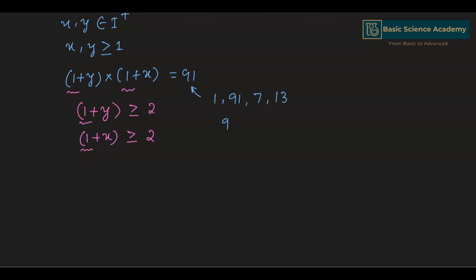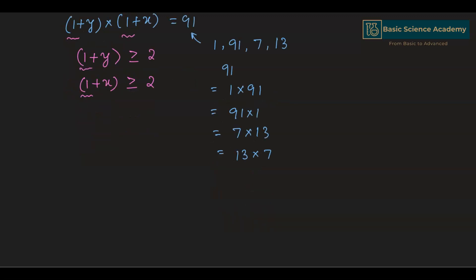Hence we can write the factor pairs as: 1 multiplied by 91, 91 multiplied by 1, 7 multiplied by 13, and 13 multiplied by 7. Since both (1 plus y) and (1 plus x) are greater than or equal to 2, the factor pairs 1×91 and 91×1 cannot be the answer, because the value of 1 plus x and 1 plus y cannot be 1.